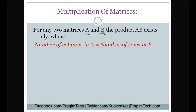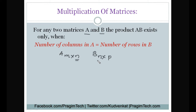In order to perform multiplication between two matrices A and B, the condition is: the number of columns in A should be equal to the number of rows in B. If matrix A is of order m by n and matrix B is of order n by p, then only we can say that the multiplication of these two matrices is possible, as columns in A equals rows in B.